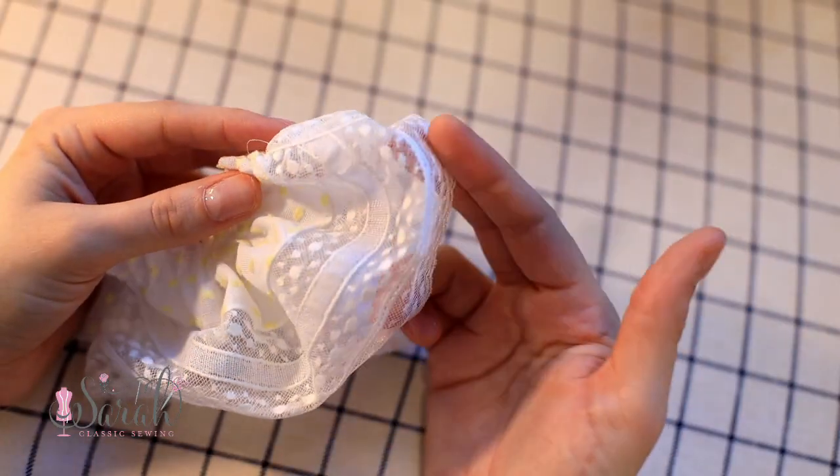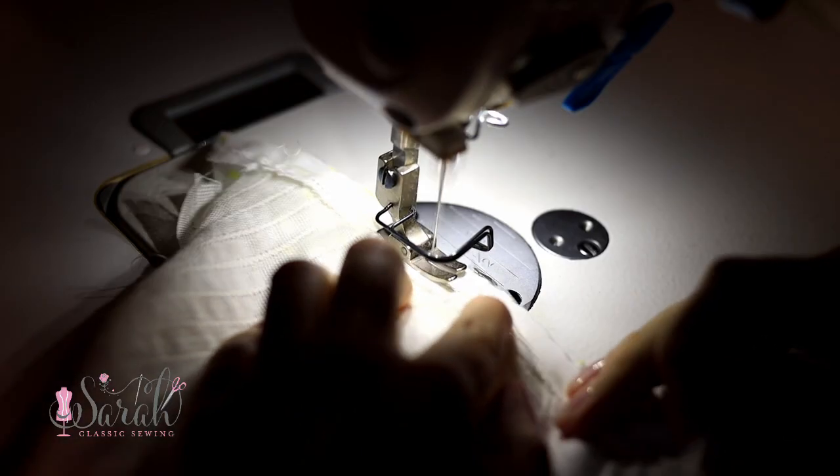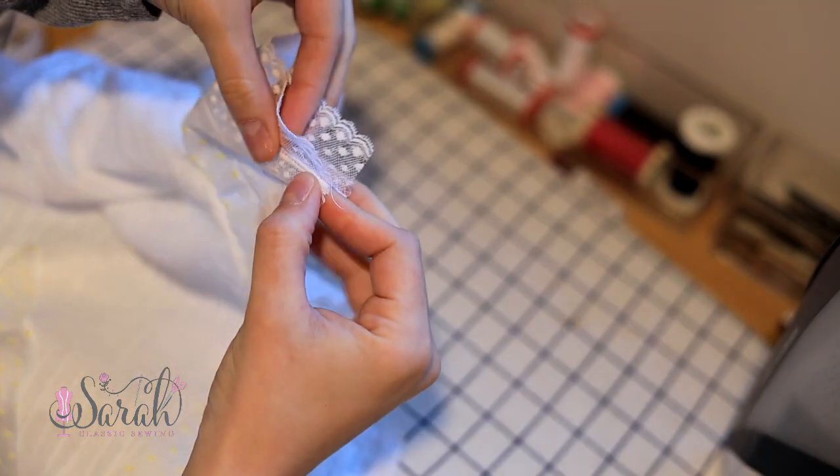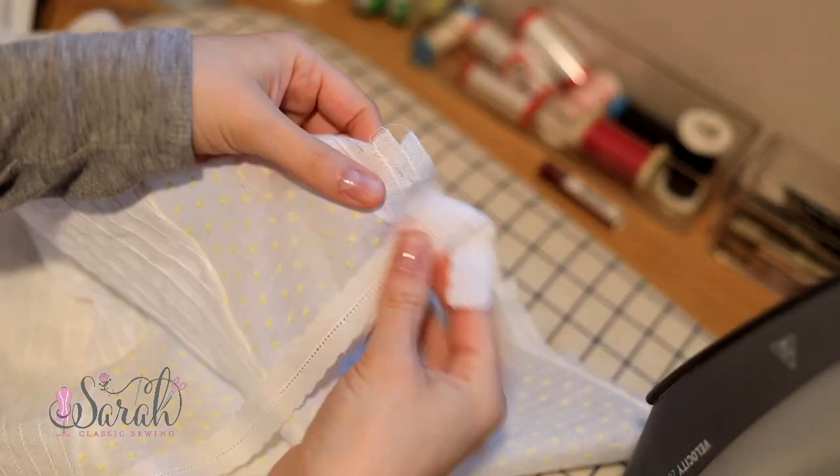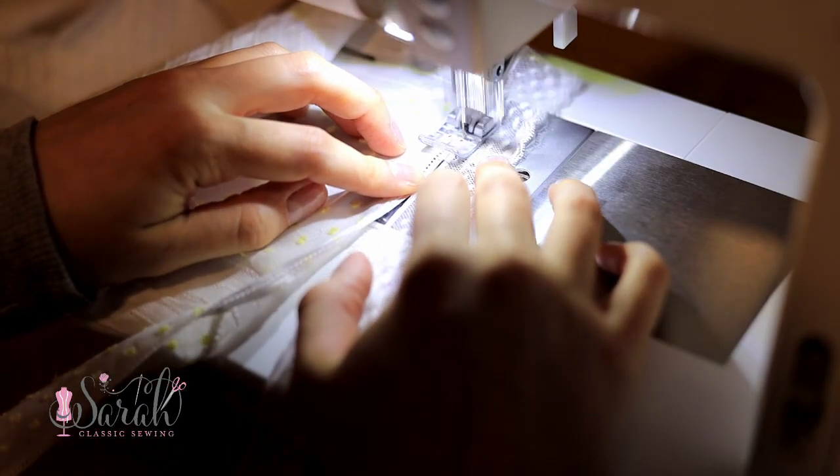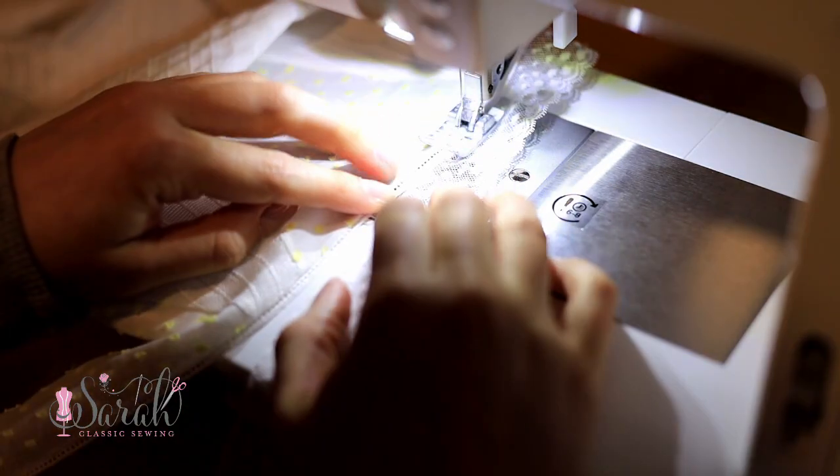So I'm overlapping the lace sections and then adding some entredeux and finally some edging lace. How darling, right? So fun and different. I gather up the sleeves and attach them to my dress, which allows me to finish one side via a French seam. Then I can finish the hem with some more entredeux, you guessed it, more entredeux, and finally some French lace edging, which allows me to finish the other side seam with a French seam.